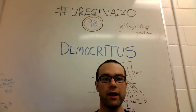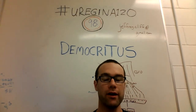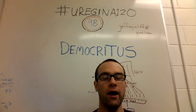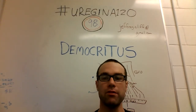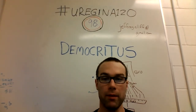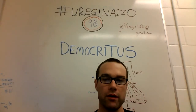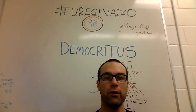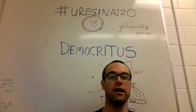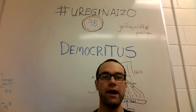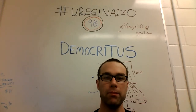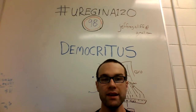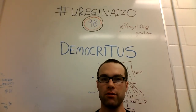Before we get into that, I want to point out there was an error in the video on Aristotle. I stated that he was the origin of the four elements idea, and that is incorrect. The discovery was by Empedocles, who gave Aristotle the idea of four elements existing.